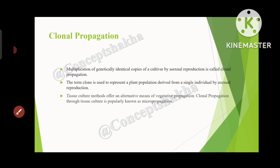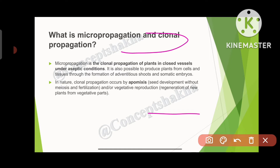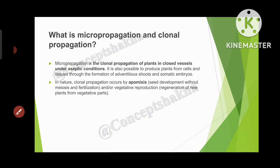What is the difference between micropropagation and clonal propagation? Micropropagation is the clonal propagation of plants in closed vessels under aseptic conditions. It is also possible to produce plants from cells and tissues through the formation of adventitious shoots and somatic embryos. In nature, clonal propagation occurs as apomixis, which is seed development without meiosis and fertilization. Along with apomixis, vegetative reproduction also occurs, which is the regeneration of new plants from vegetative parts. So micropropagation is a part of clonal propagation — when the process is done in closed vessels under controlled conditions, it is called micropropagation.